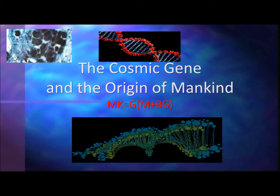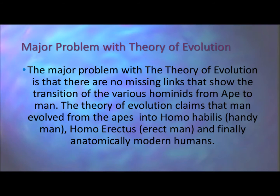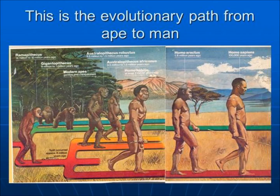The cosmic black gene, melanin, and the origin of mankind. Scientists have found skeletal remains of various hominids, including anatomically modern humans and ape-men. To explain the presence of these diverse hominids, scientists created the theory of evolution, which maintains that man evolved from apes. The major problem with this theory is that there are no missing links showing the transition from ape to man. The theory claims man evolved from apes into Homo habilis, then from Homo habilis to Homo erectus.